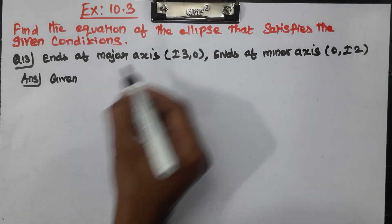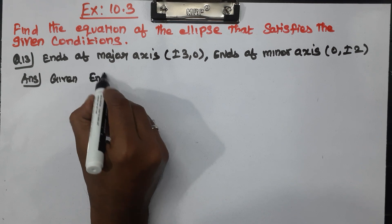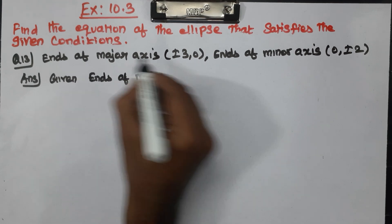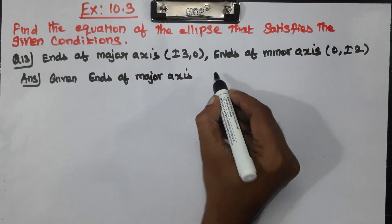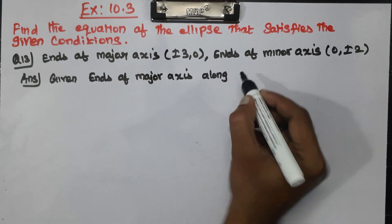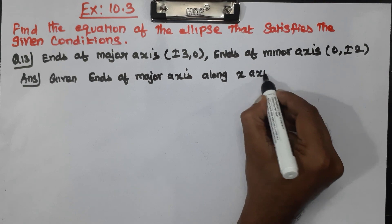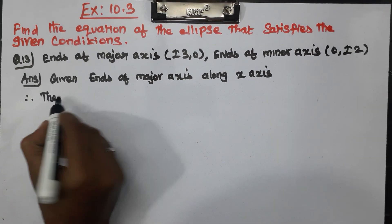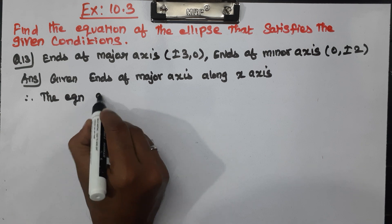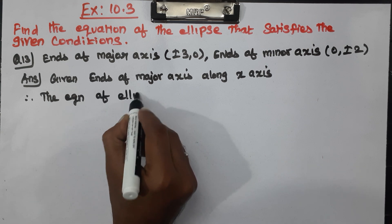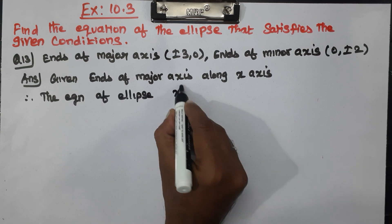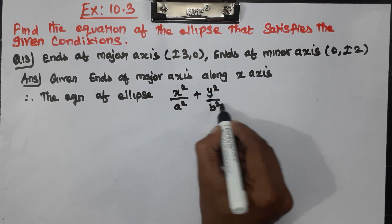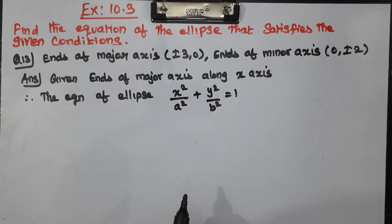Given: the major axis is along the x-axis. Therefore, the equation of the ellipse is x squared by a squared plus y squared by b squared equal to 1.